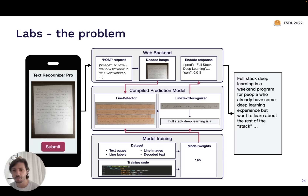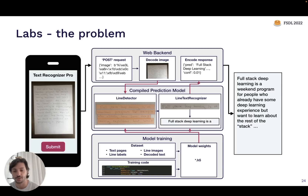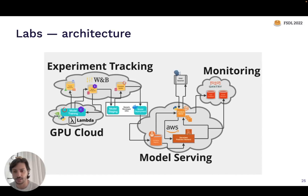One of the most valuable parts of this class is the labs, which have undergone a big revamp this time around. The problem we're going to work on is creating an application that allows you to take a picture of a handwritten page of text and transcribe it. We'll build a web backend that sends requests, decodes images, and sends them to an OCR prediction model that we'll develop. Those models will be generated by a model training system, and the architecture will use state-of-the-art tools that balance building the system in a principled way without adding too much complexity.